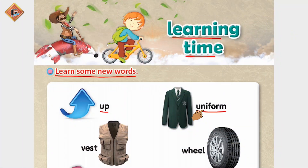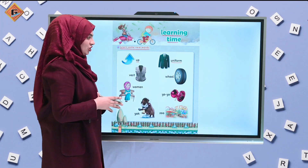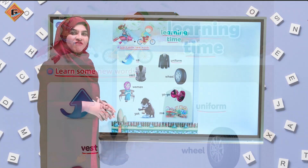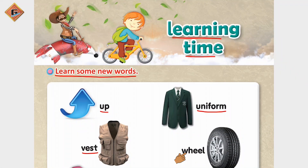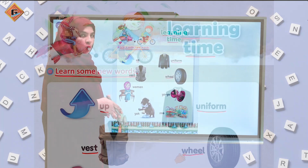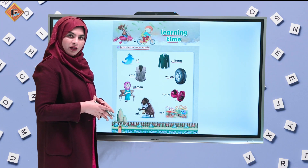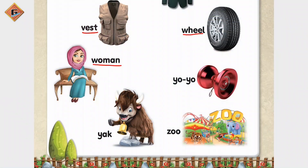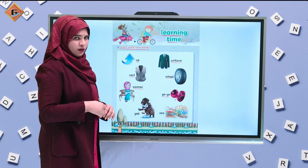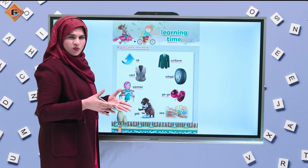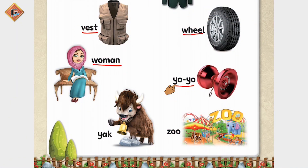Then see the next one — it starts from U — uniform. Next is west, then wheel, then woman. And then yo-yo — we play with yo-yo and enjoy it. If you have a yo-yo, I think you will enjoy it.